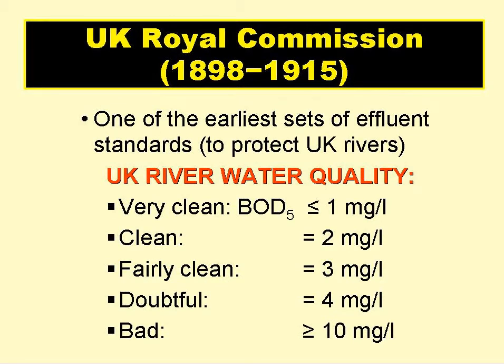The UK Royal Commission on Sewage Disposal, which sat from 1898 to 1915, produced one of the earliest sets of effluent standards to protect UK rivers. It classified river water quality on the basis of a new test that it introduced — the five-day BOD of the river water. Very clean rivers had a BOD of no more than one milligram per litre, clean was a BOD of two milligrams per litre, and so on, as shown on the slide.